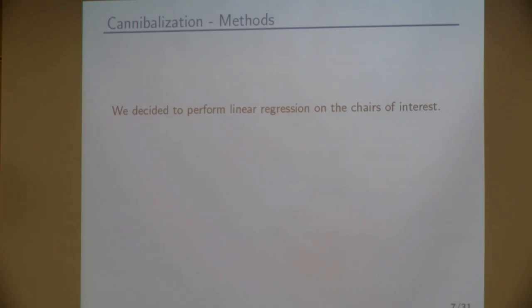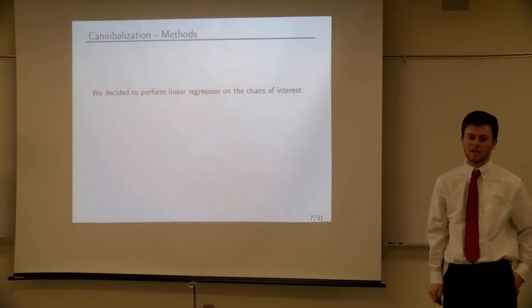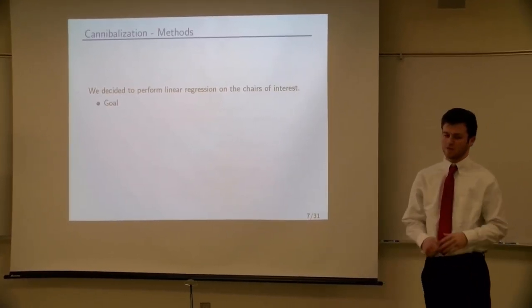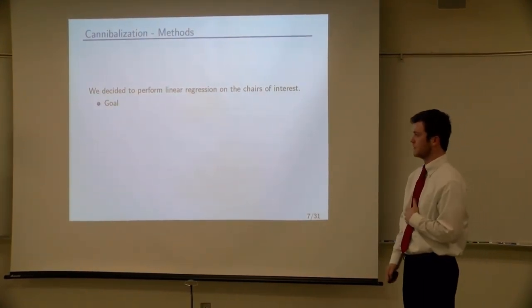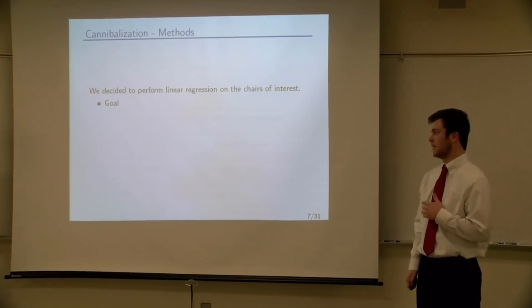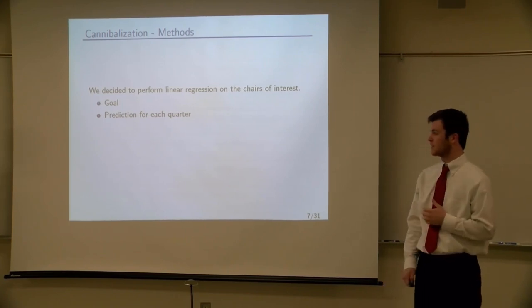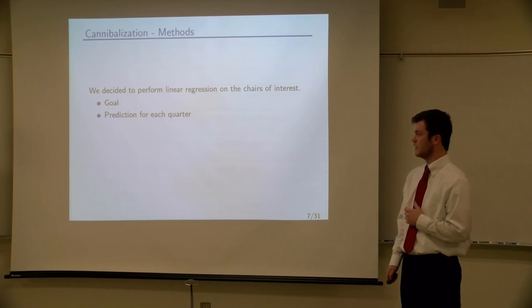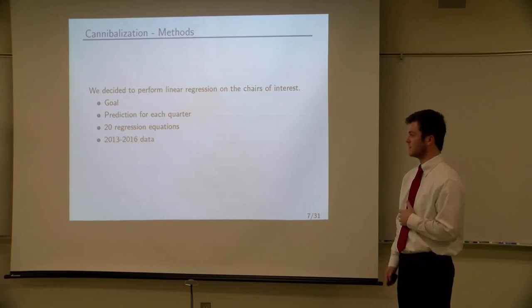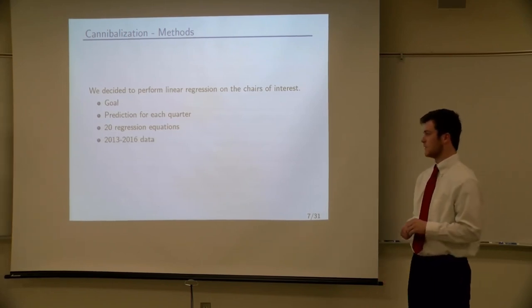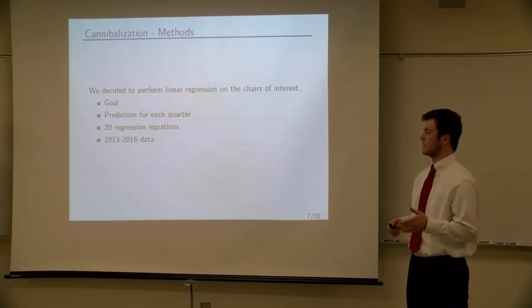Yeah, so to try to calculate any potential cannibalization from Series 1, we decided to perform linear regression on the other five chairs of interest. So the goal was to predict what the sales for those five chairs would have been in 2018 had Series 1 not been introduced. And then compare those projected sales to the actual sales with Series 1. And as Amanda said, the sales for these chairs are pretty cyclical, so we decided to do a prediction for each quarter. So that gave us 20 regression equations as there's four quarters and five different chairs of interest. And then we decided to use 2013 to 2016 data because we found that that gave us much more accurate predictions than what the entire dataset gave us.